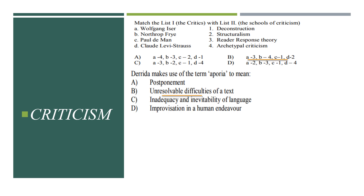The next area is Criticism. This covers No Criticism, Emerging Trends in Criticism, Classical Criticism, full-form textbooks, terms, and match-the-following type questions. For example: 'Match the list of critics and schools of criticism.' You need to match Wolfgang Iser with Reader Response Theory, Northrop Frye with Archetypal Criticism, Paul de Man with Deconstruction, and Claude Lévi-Strauss with Structuralism. The answer is option B. The background, major contributions, and major textbooks of each critic are important.